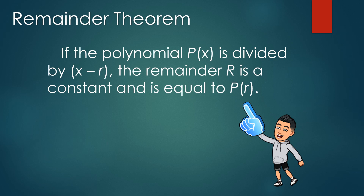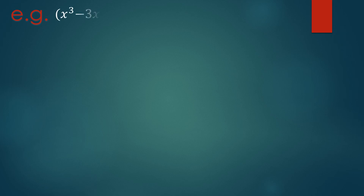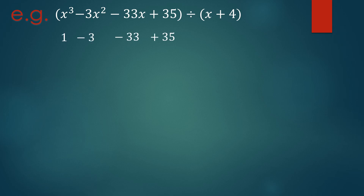Let's have a proof. If we divide x cubed minus 3x squared minus 33x plus 35 by x plus 4, let us find the remainder. Using synthetic division, we use the numerical coefficients from the given polynomial. On the left side, we use the value of x from our divisor, which is negative 4.